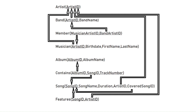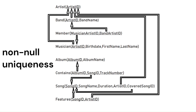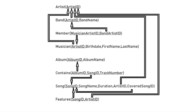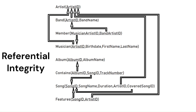When we create a database, we typically also specify constraints on the attributes. We've actually already specified some constraints in this diagram. The underlined primary keys are subject to non-null and uniqueness constraints. You can also have these constraints individually on any given attribute, even if it's not a primary key. The foreign keys are subject to referential integrity constraints, meaning that any foreign key value must be null or be equal to a primary key in the home relationship.